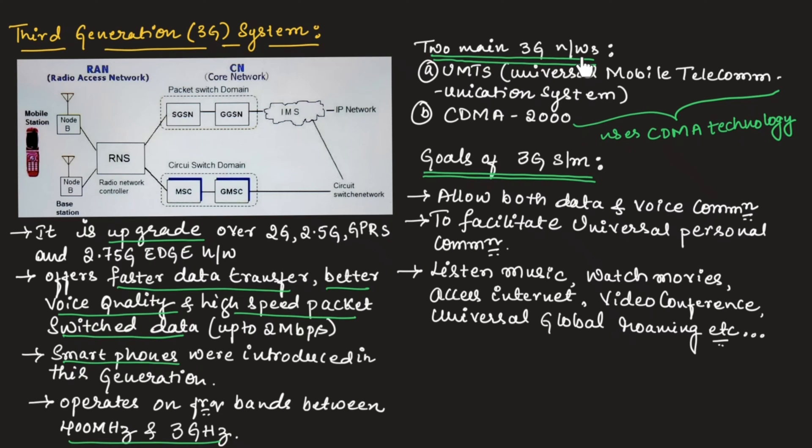There are two main 3G networks that were used in third generation. First one is UMTS, which is universal mobile telecommunication system, and second one is CDMA 2000. These two networks used CDMA technology. Both UMTS as well as CDMA 2000 used CDMA technology.